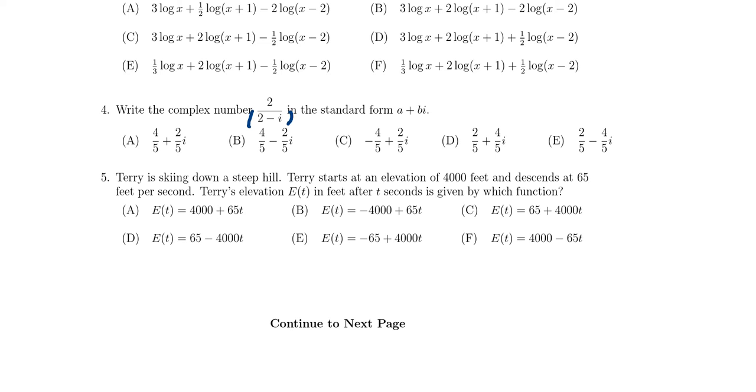So what we're going to do is multiply the top and bottom of the fraction by the conjugate, the complex conjugate of its denominator. So the original denominator being 2 minus i, its conjugate is going to be 2 plus i.